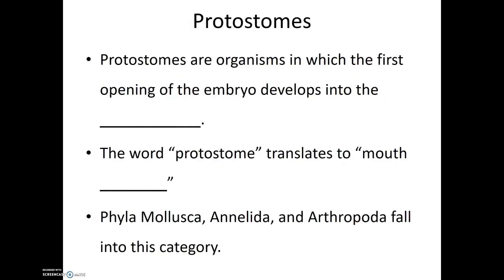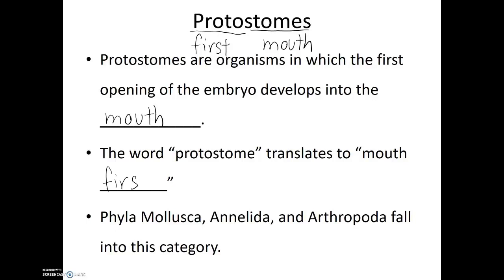There are two ways in which these cavities form. For some animals, the very first opening of the embryo develops into the mouth. These animals are known as protostomes. The name protostome — proto means first, and 'stome' refers to mouth — so their name literally translates into 'mouth first.' Phylum Mollusca, phylum Annelida, and phylum Arthropoda all fall into this category.